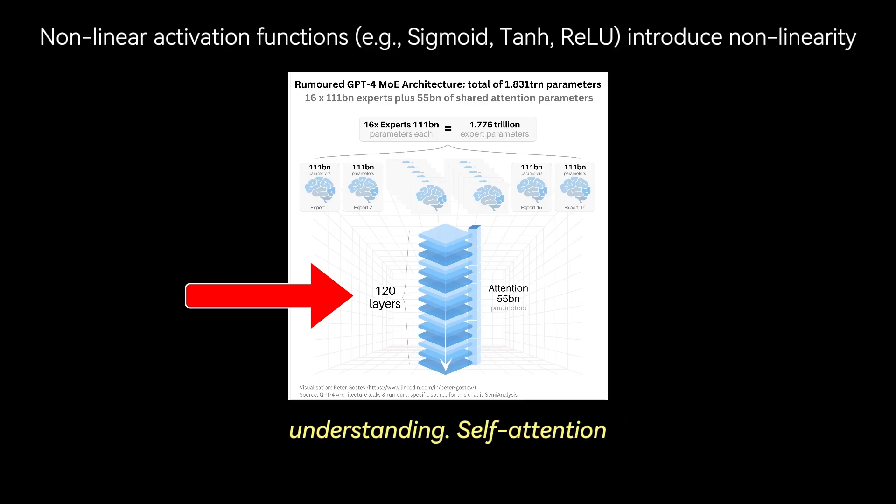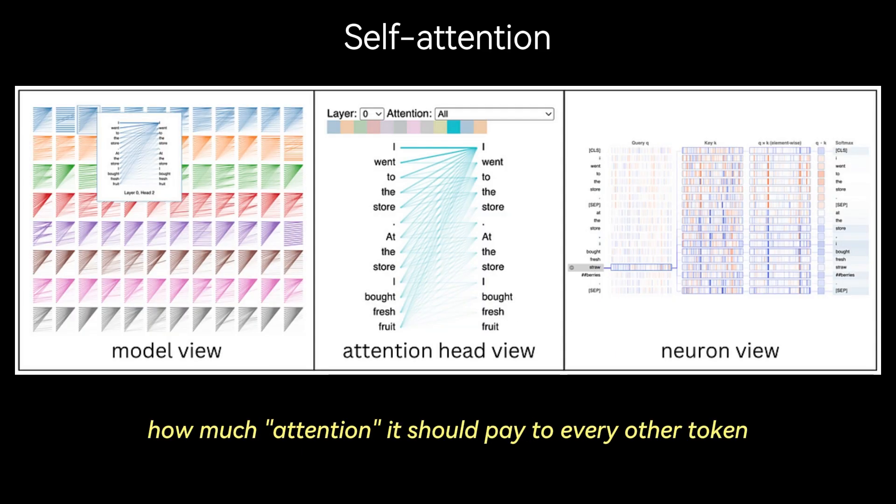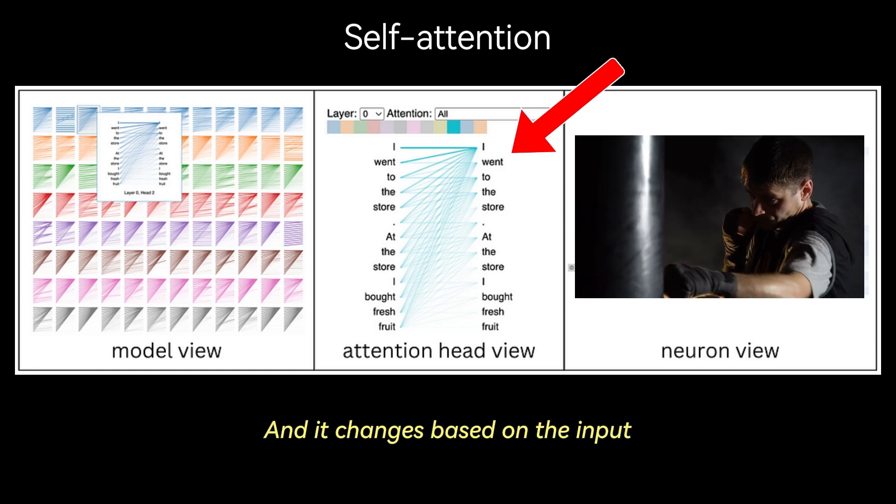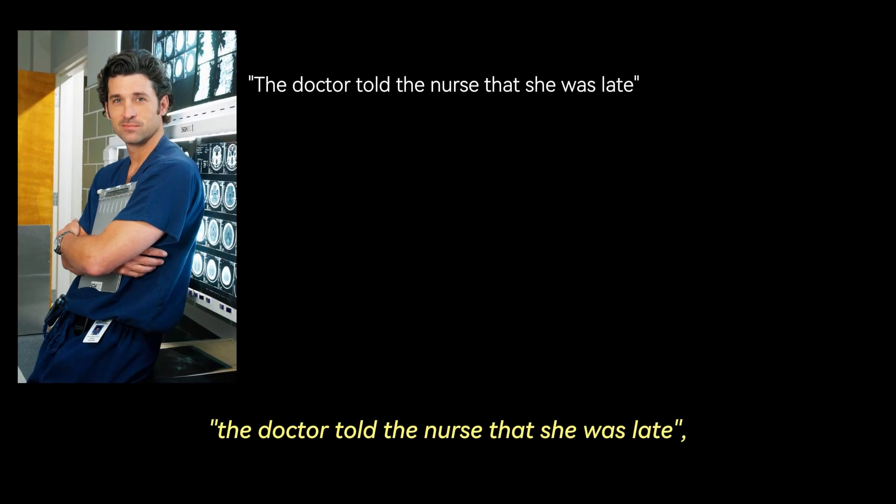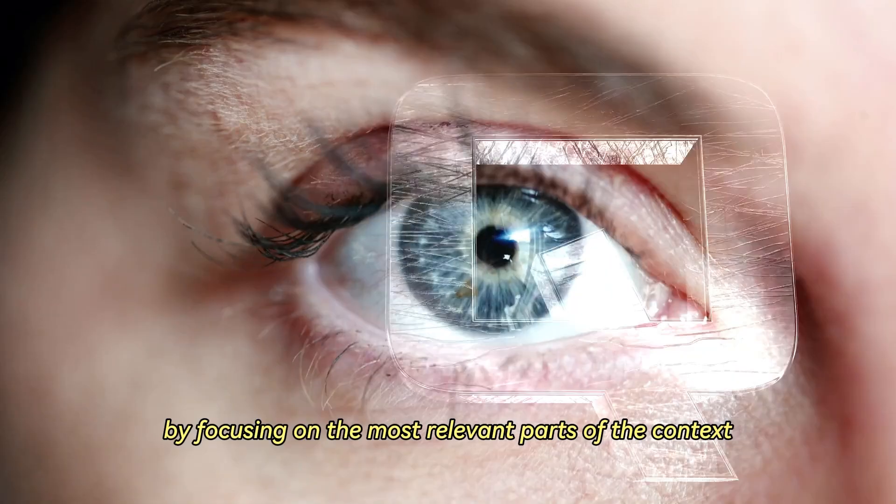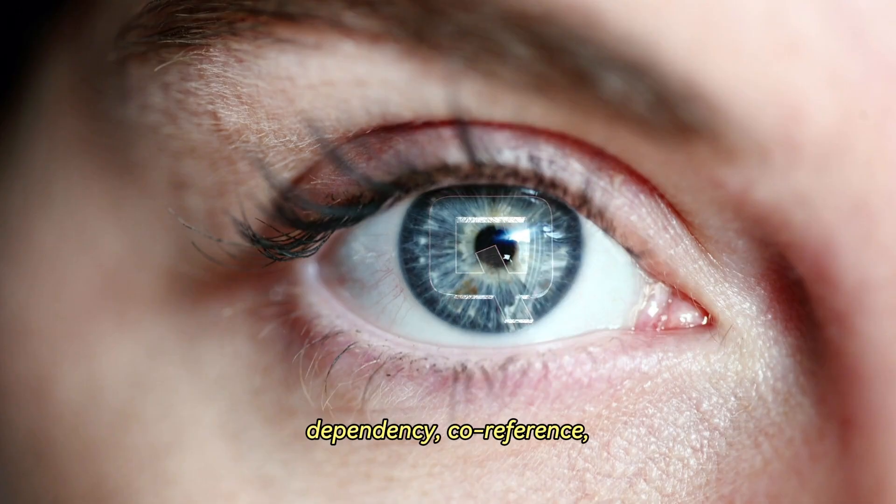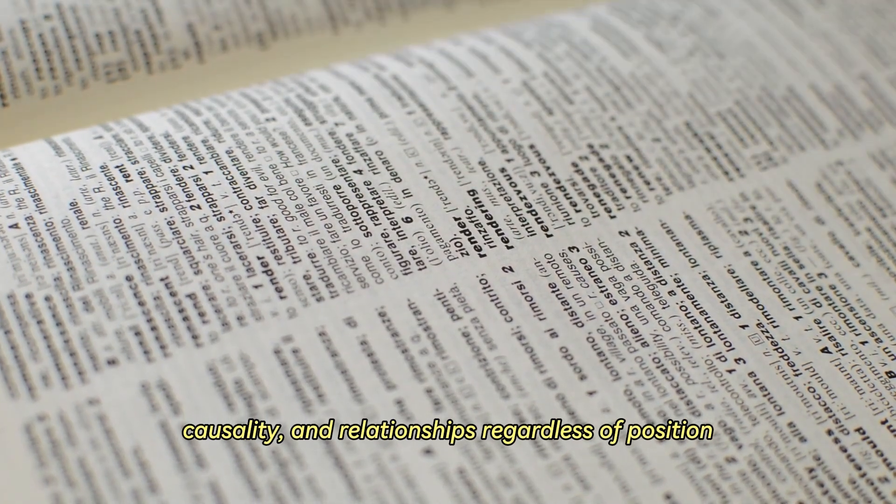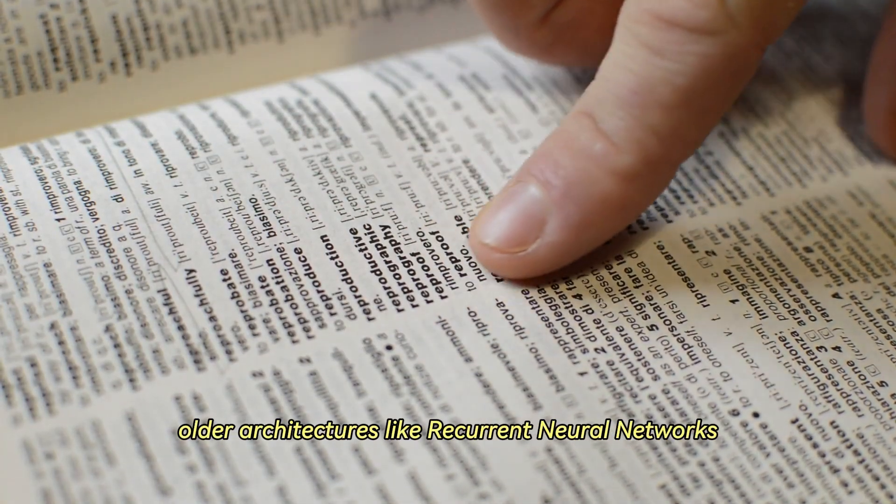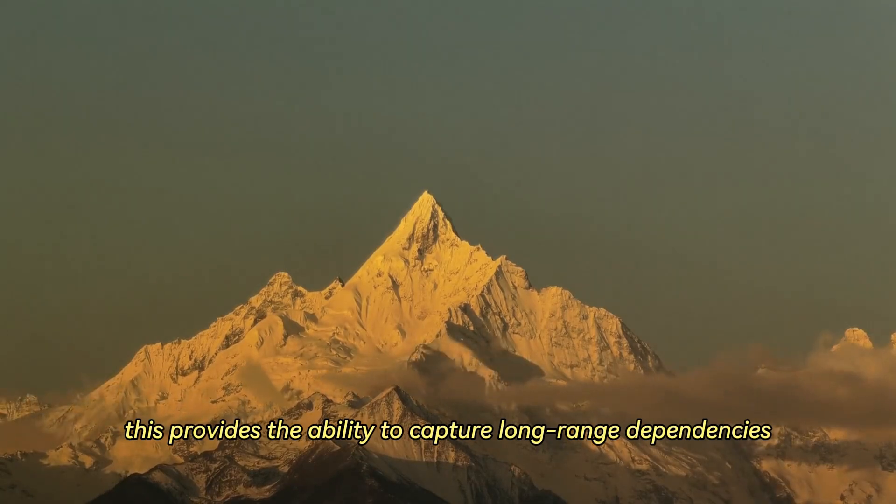Self-attention is arguably the most critical innovation in LLMs. For every token, the model computes how much attention it should pay to every other token in the sequence. This isn't hard-coded, it's learned during training, and it changes based on the input. For example, in the sentence, 'the doctor told the nurse that she was late,' attention helps the model determine whether 'she' refers to the doctor or the nurse, by focusing on the most relevant parts of the context. This mechanism allows the model to dynamically model dependency, co-reference, causality, and relationships regardless of position. This is a significant departure from older architectures like recurrent neural networks or RNNs, which process information sequentially and struggle to connect words that are far apart in a sentence. So this provides the ability to capture long-range dependencies.